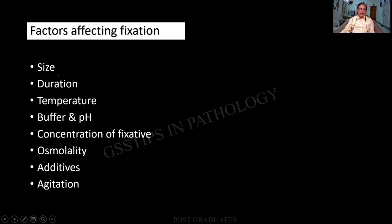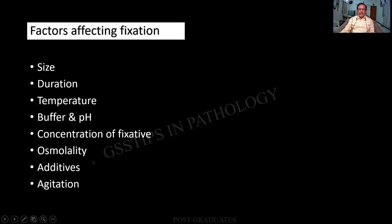The common denominator for fixative volume is at least 10 to 15 times the volume of the tissue. Duration: for small biopsies it can be as minimal as one hour, but for larger ones a much longer duration is needed. Temperature: room temperature is prescribed, whereas for electron microscopy it will be 0 to 4 degrees. A buffer must be used to maintain pH at around 6.8 to 7.5. Concentration is of paramount importance — we send 10% formalin, but it can arrive diluted and fixation becomes inadequate. Osmolality indicates permeation. Additives can be used, sometimes called post-fixation. Agitation will definitely improve permeability and percolation.